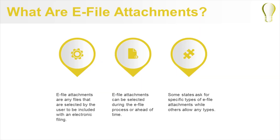E-file attachments are any files that are selected by the user to be included with an electronic filing. Attachments can be selected during the e-file process or they can be set ahead of time. Some states ask for specific attachment types while others allow you to attach any type.